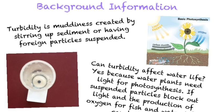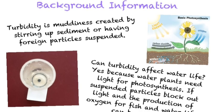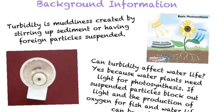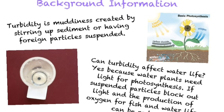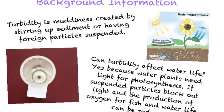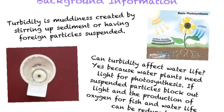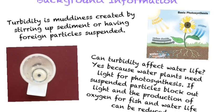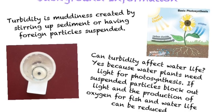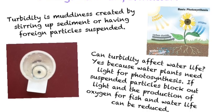First, we tested for turbidity, which is the muddiness created by stirring up sediment or having foreign particles suspended. Turbidity can affect water life because the plants need oxygen from photosynthesis, and the mud is blocking the light so they can't get oxygen to survive.